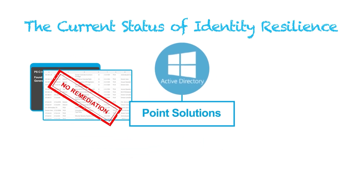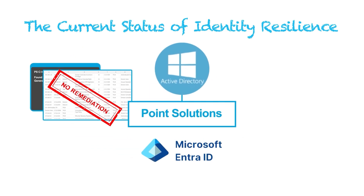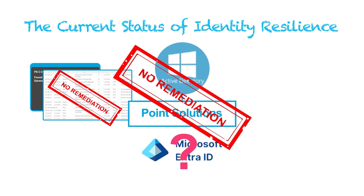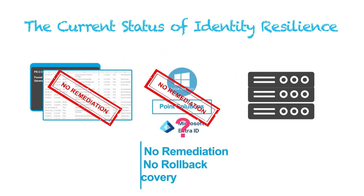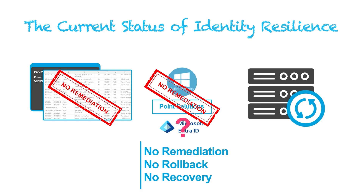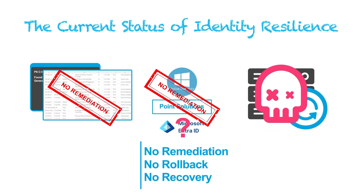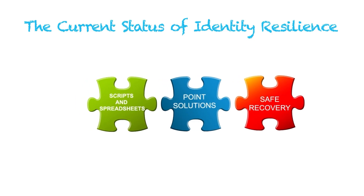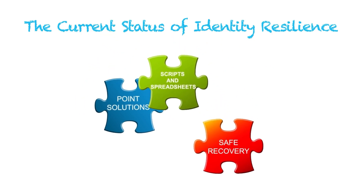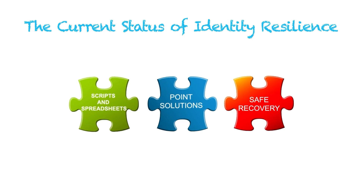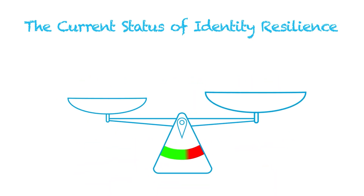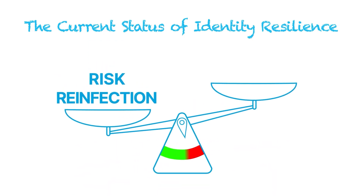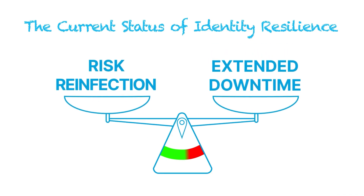Point solutions deliver insights around changes to Active Directory, but provide little in terms of remediation. And backups that end up being part of the attack itself, leaving organizations with no means to recover at all. In the end, we're left having to piecemeal these solutions together, manually revert changes to our identity configurations, and face an impossible decision when our systems are down — risk immediate reinfection by restoring from a potentially compromised backup, or extend the business disruption by attempting a slow manual rebuild and verification.